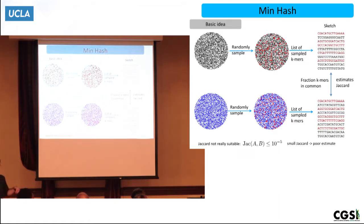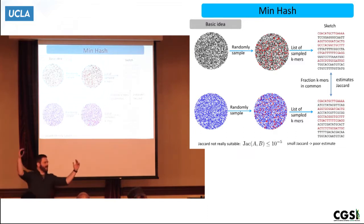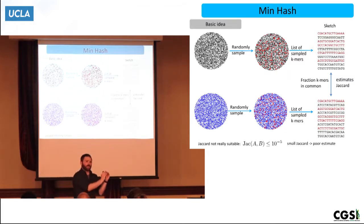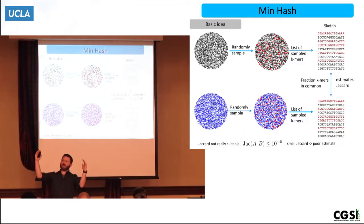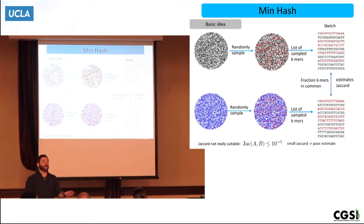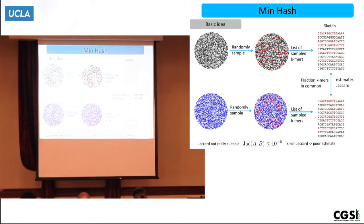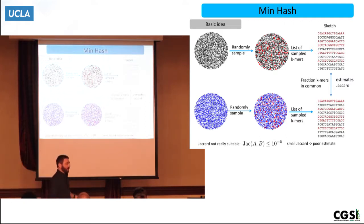Unfortunately, for metagenomic classification, that's exactly the situation we're in. We have the metagenome K-mers — a hundred trillion K-mers — and then the K-mers in one reference organism, maybe a few million. So the Jaccard index is always going to be really small, which means this approach is going to give you a poor estimate.